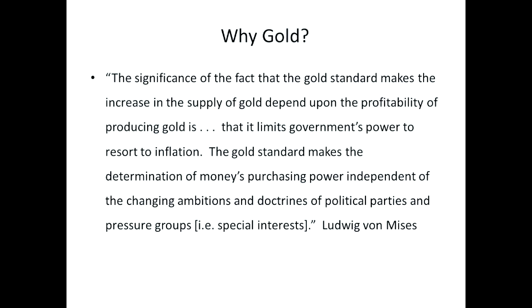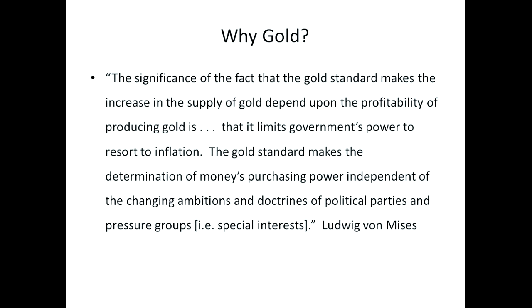Let's start with a quote from Mises. Why gold? Why do we support the gold standard? You could substitute for gold commodity money. People who are in favor of the gold standard tend to be in favor of anything that the market chooses, and the market did choose gold, with some help from government in pushing out silver in the 19th century. Mises basically says the reason why gold is because it makes the purchasing power of money immune to the attempts of politicians to manipulate its value for their own benefit and for the benefit of their cronies and constituencies.